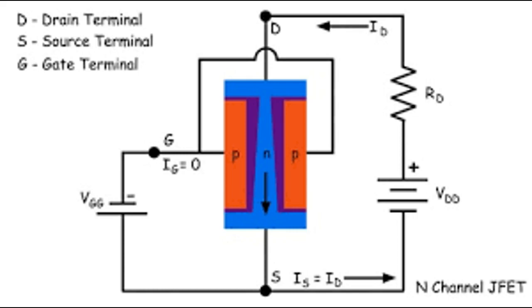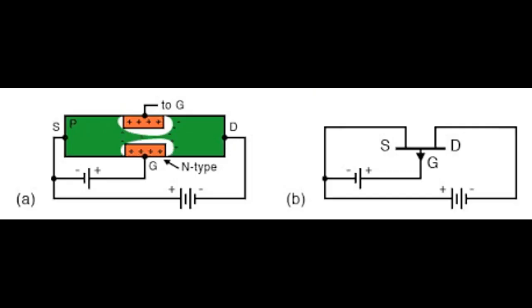Now, when a reverse voltage VGS is applied between the gate and the source terminals, the width of depletion layers is increased and this decreases the width of the conduction channel. Thereby, increasing the resistance of conduction channel, consequently, the current from source to drain is decreased.